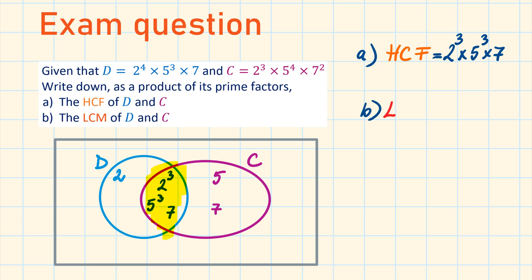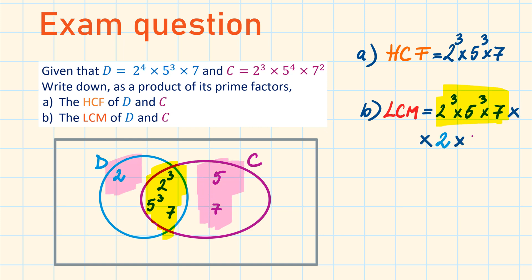We find the LCM by taking the product of every number in the Venn diagram: 2³ × 5³ × 7 multiplied by the leftovers 2 × 5 × 7. Simplifying gives 2⁴ × 5⁴ × 7².